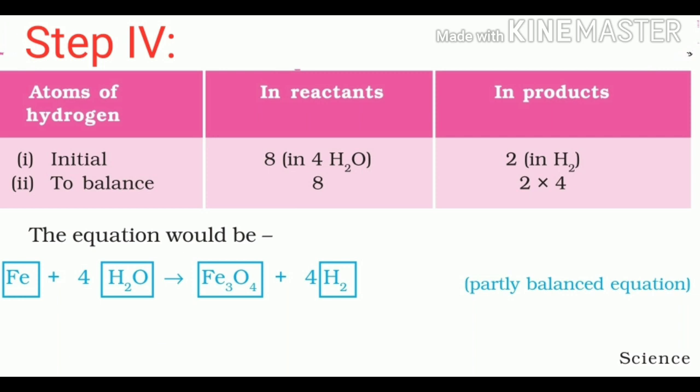Step 4: Iron and Hydrogen atoms are still not balanced. We will pick any of these elements to proceed further. Let us balance Hydrogen atoms in the partially balanced equation. To equalize the number of Hydrogen atoms, make the number of molecules of Hydrogen as 4 on the right hand side. Initially in the reactant, total 8 Hydrogen atoms are there in the form of 4H2O. In the product, initially 2 Hydrogen atoms are there in the form of H2. To balance, we multiply by 4 at the product side, giving 2 × 4 = 8. The equation becomes: Fe + 4H2O → Fe3O4 + 4H2.